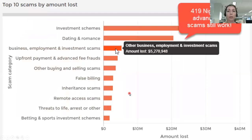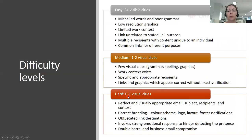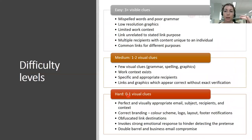Let's keep going. Here are the difficulty levels. There's not a lot of established research prescribing specific difficulty levels, so these are basic guidelines you can use or adapt. For easy, you provide three or more visual clues — misspelled words, poor grammar, low resolution or stretched graphics, limited work context (maybe a personal or completely random context), and common links used for different purposes.